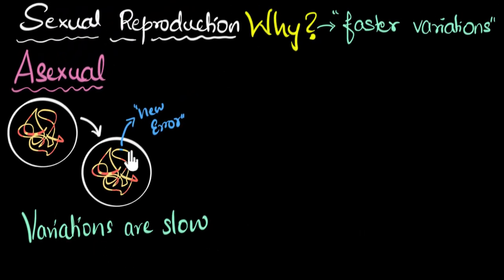Errors need to be introduced slowly. And since variations are dependent on the errors, that means the variations also will be very, very slow. So what to do? Well, this is the reason nature came up with a new kind of reproduction altogether, sexual reproduction. And as we will see, this technique doesn't solely depend on errors for introducing variations. Errors are definitely required, but there is another way in which it introduces variations in its offspring. Let's see how.